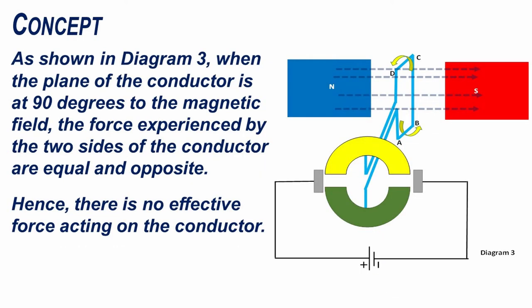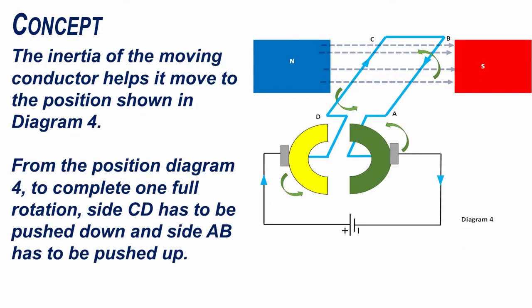As shown in diagram 3, when the plane of the conductor is at 90 degrees to the magnetic field, the force experienced by the two sides of the conductor are equal and opposite. Hence, there is no effective force acting on the conductor. The inertia of the moving conductor helps it to move to the position shown in diagram 4.